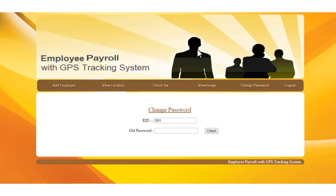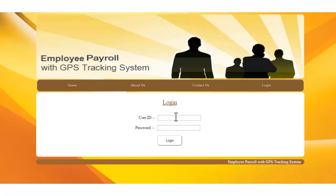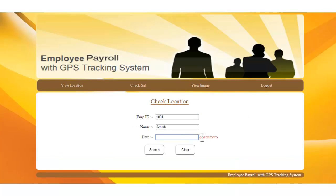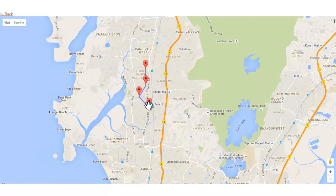That covers the admin part. Now let's check the HR module. HR has its own ID and password. After logging in, it has options of view location, check salary, and view image — the same as the admin modules. To check location, you enter the employee details and date, then click search. You are shown that employee's work progress for that particular date, which you can verify.